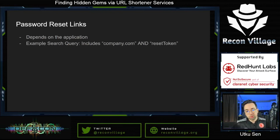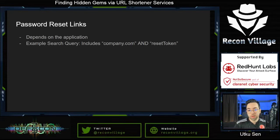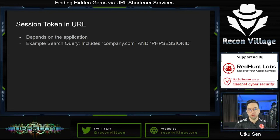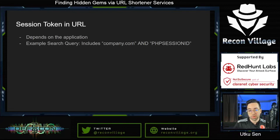Another useful data category is URLs that contain password reset tokens. Some websites allow the password reset link to be used multiple times. As a search query, you need to determine what strings are included in those URLs and search for them — for example, both company.com and 'reset token.' Some websites also send session tokens via GET requests. If you know a website does that, you can search for them to log in on behalf of other users, for example searching for company.com and 'PHPSESSID.'